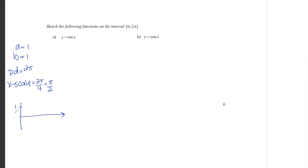I'm going to graph this from zero to two pi. My amplitude is one, so I label my y-axis positive one and negative one. The x-scale tells me to put an x value every pi over two units until I get to two pi: pi over two, pi, three pi over two, and two pi. At each of these values I need either a maximum, minimum, or x-intercept. Sine always starts at zero zero. Sine of pi over two is one, sine of pi is zero, sine of three pi over two is negative one, and sine of two pi is zero. Connecting those points gives me the graph of y equals sine x.